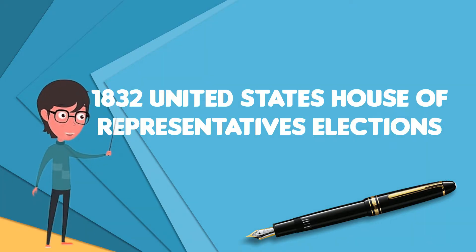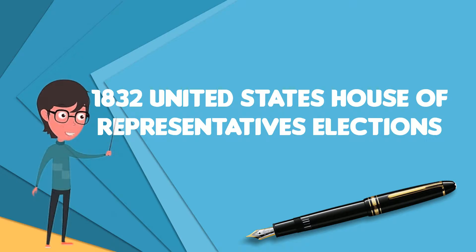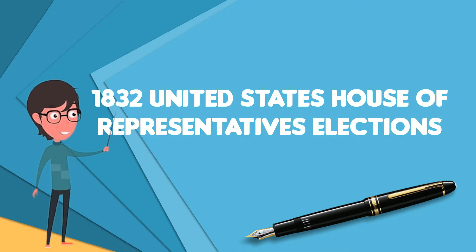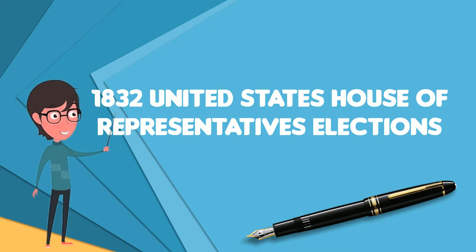Elections to the United States House of Representatives were held in 1832. They were held concurrently with the 1832 presidential election, in which Democrat Andrew Jackson was re-elected.